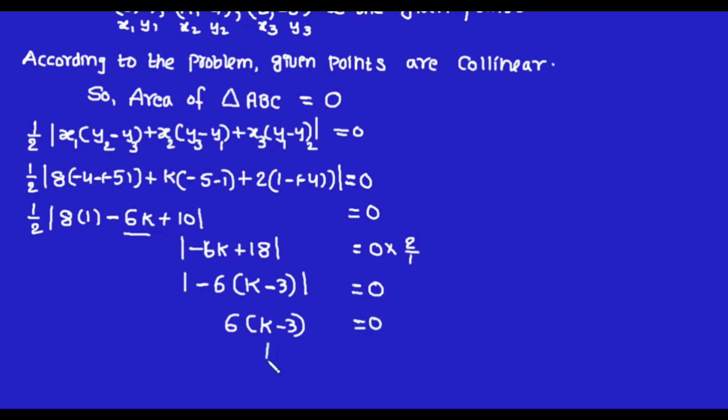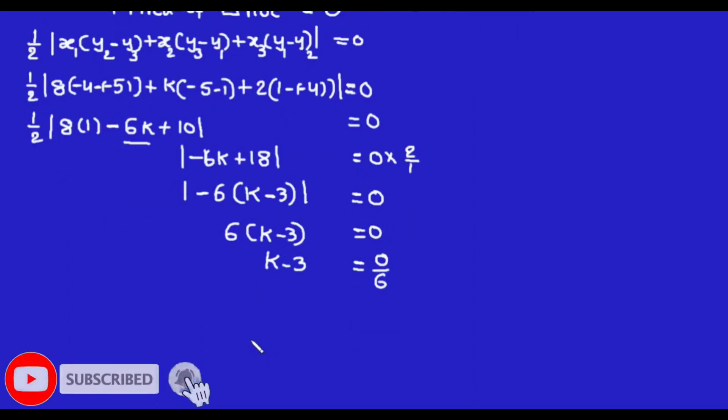Now move the constant 6 to the right-hand side. Then we will get k-3 = 0/6. We know that 0 divided by anything is equal to 0. So k-3 = 0.